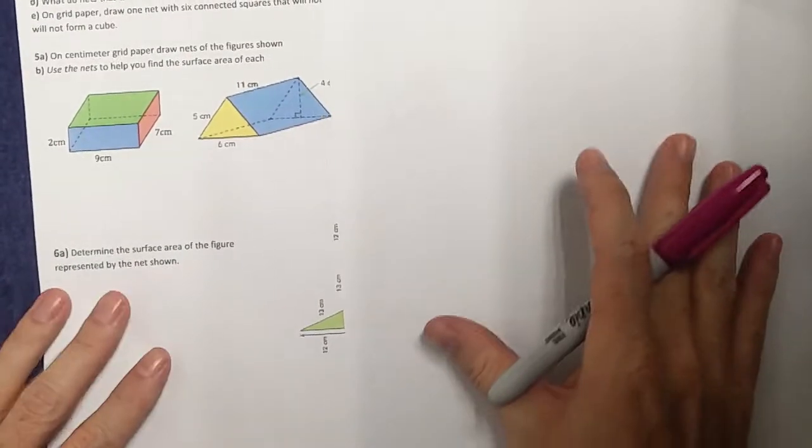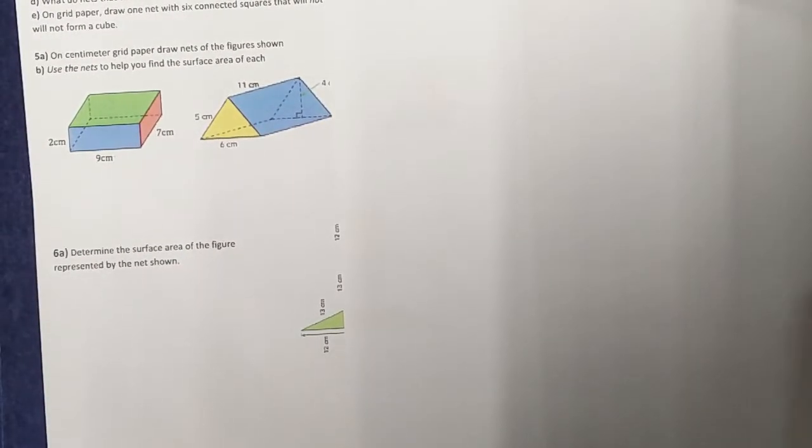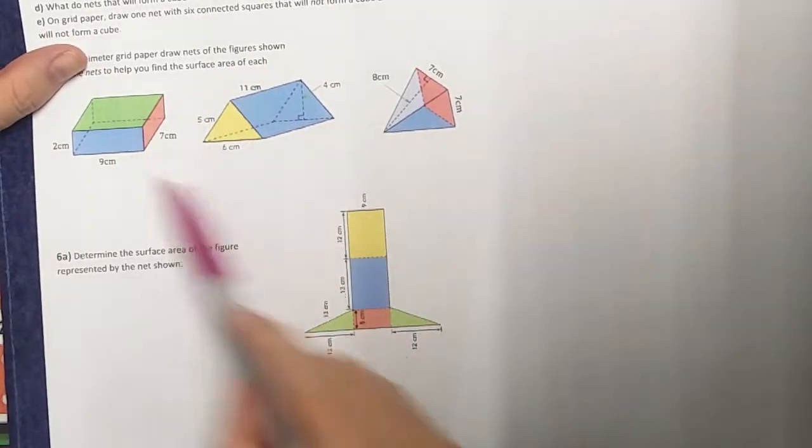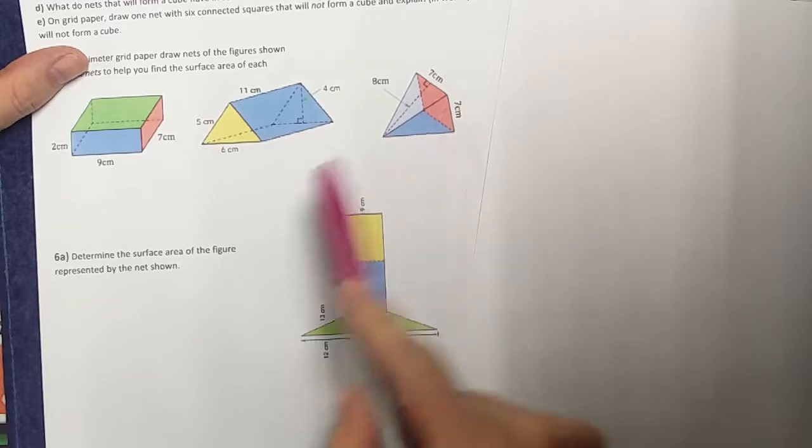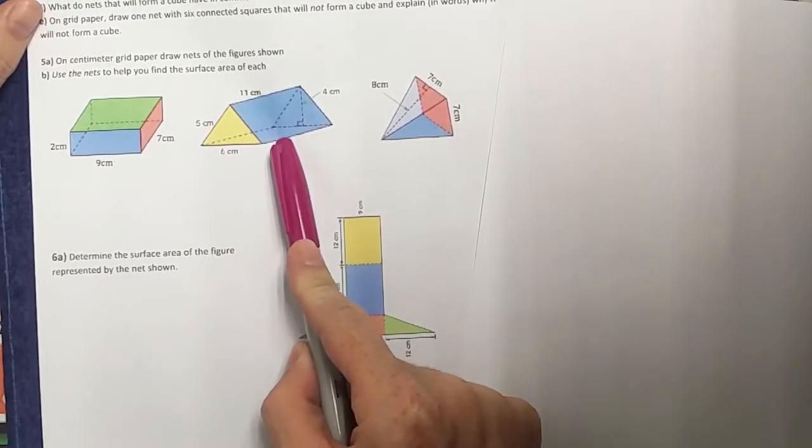And we're back with another video. This video is about today's lesson, which was volume. I have the homework from yesterday and I have my three shapes here: I have a square pyramid, a triangular prism, and a rectangular prism.